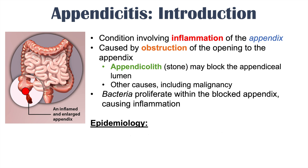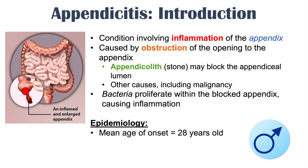What is the epidemiology of appendicitis? The mean age of onset is 20 years of age, and males slightly outnumber females.